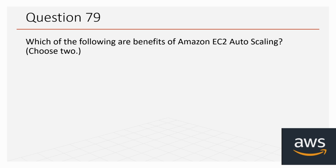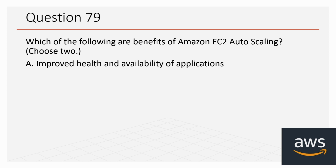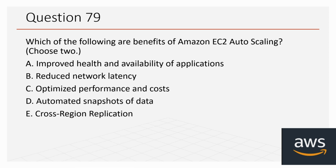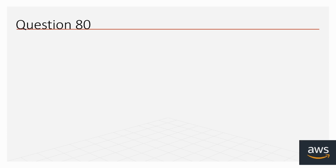Question 79: Which of the following are benefits of Amazon EC2 Auto Scaling? Choose two options. A: Improved health and availability of applications. B: Reduced network latency. C: Optimized performance and cost. D: Automated snapshots of data. E: Cross-region replication. The correct options are A and C — improved health and availability of applications, and optimized performance and costs.